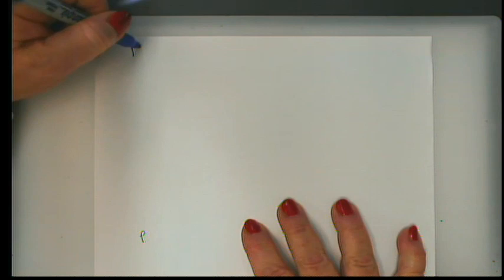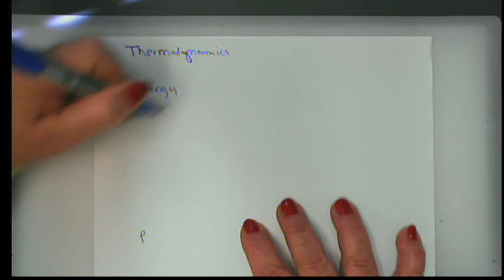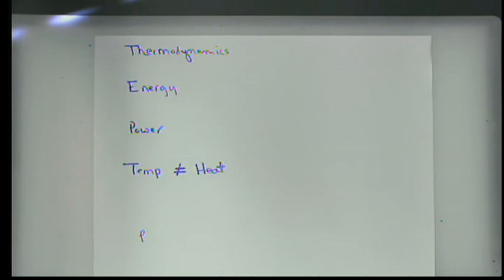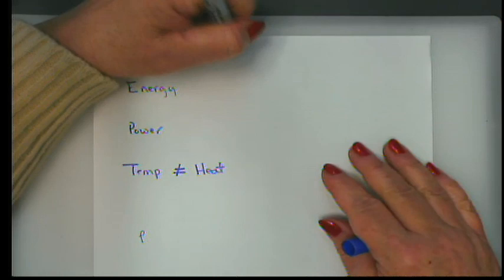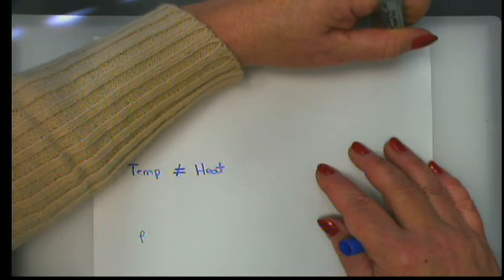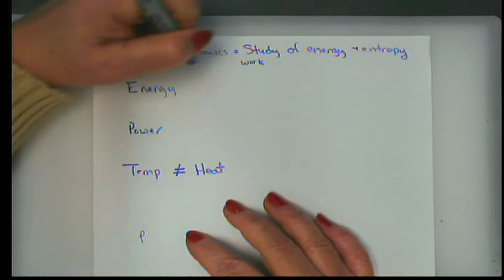So what is thermodynamics? What is energy, power, temperature? First: temperature is not heat. Heat is something else and we'll explain both. Thermodynamics is defined as the study of energy and entropy. Energy is the ability to do work, and not all energy is work.